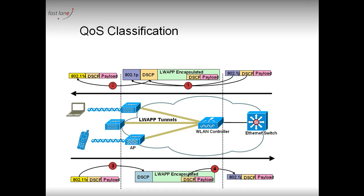For that reason, trust cos (802.1p) on the controller port and trust DSCP on the access point port. In the next video, we'll look at how to configure the Ethernet switch for this QoS — how to do the mapping and prioritize voice packets between access points and controllers on the switch and routers. Thank you for watching.